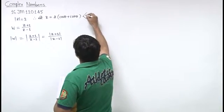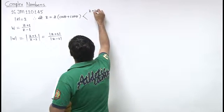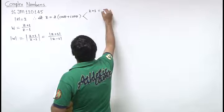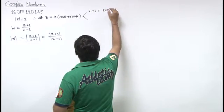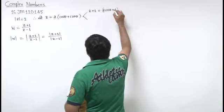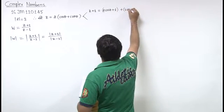So from here, z plus 1 will be 2 cos theta plus 1, plus 2 sin theta into iota.